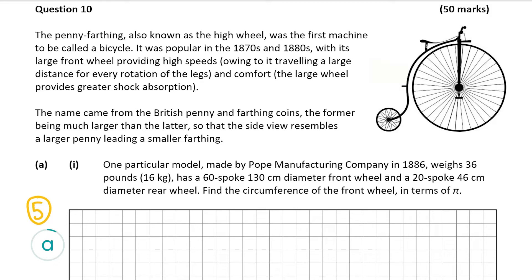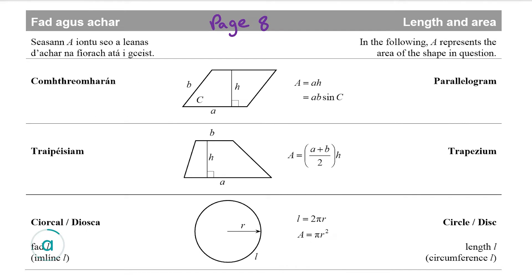We're asked to find the circumference of the front wheel in terms of pi. Looking at page eight of our formula tables book, the circumference formula is L equals 2πr. Since 2 times r equals the diameter, we can rewrite that as pi times the diameter. We're given the diameter in the question, which makes it easier for us.